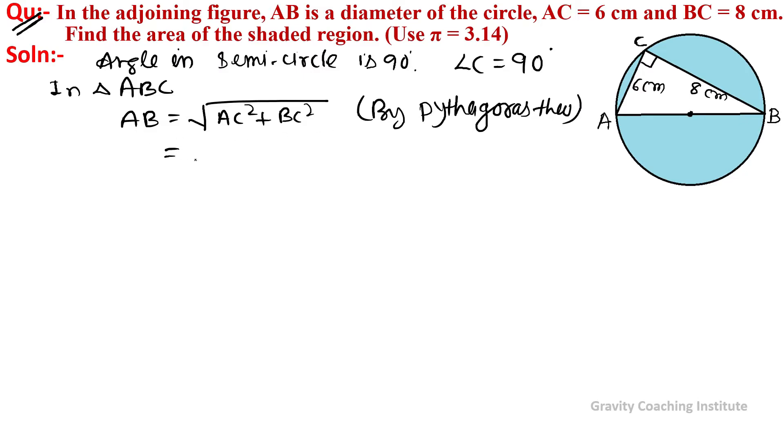So AB = √(6² + 8²) = √(36 + 64) = √100 = 10 cm.